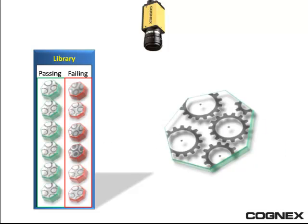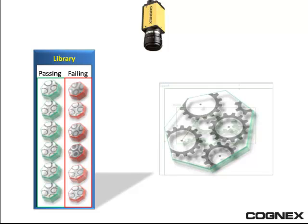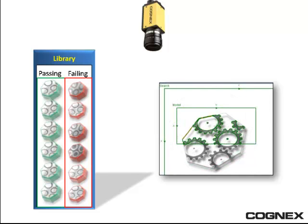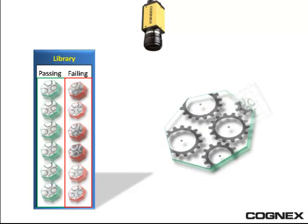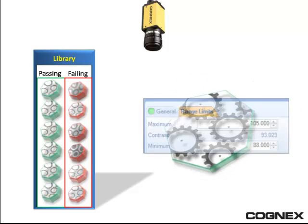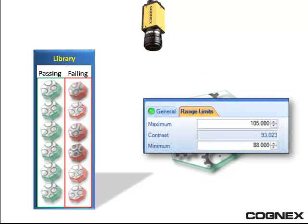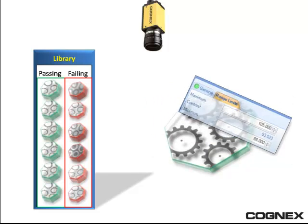This could mean expanding a search region for a feature or simply adjusting a threshold on a vision tool. Making an adjustment like this on a production line should be done with care.